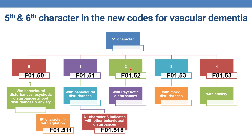Fifth character 2 indicates with psychotic disturbances. Fifth character 3 indicates with mood disturbances. Fifth character 4 indicates with anxiety. And there is only one instance where a sixth character is available — that is with behavioral disturbances, where sixth character 1 indicates with agitation and sixth character 8 indicates with other behavioral disturbances.